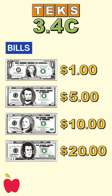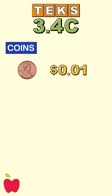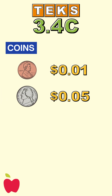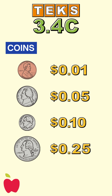Now, let's look at the coins. A penny is worth $0.01. A nickel is worth $0.05. A dime is worth $0.10. And a quarter is worth $0.25. Knowing the value of these bills and coins is important because it helps us add them up correctly when we need to figure out how much money we have or how much we need to pay.